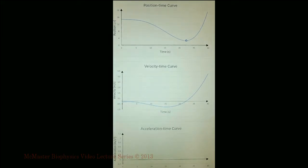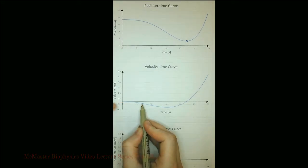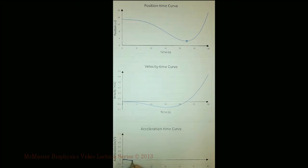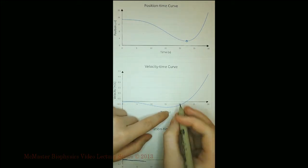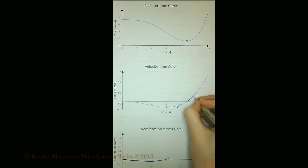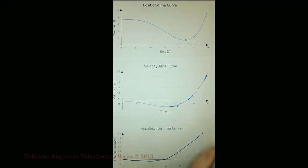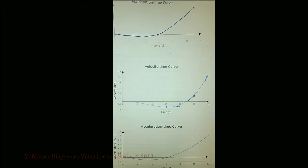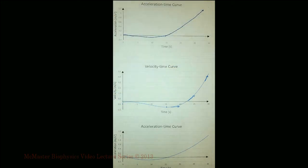To draw the acceleration-time curve, graph the slope of the velocity-time curve. At first the slope is slightly positive, then it changes to slightly negative around 2 seconds. It remains negative until about 15 seconds, where the slope changes to positive. The velocity-time curve increases in positive slope, so the acceleration-time curve must increase. Comparing this sketch to the actual acceleration-time curve, we see that the intercepts and approximate shape are the same.